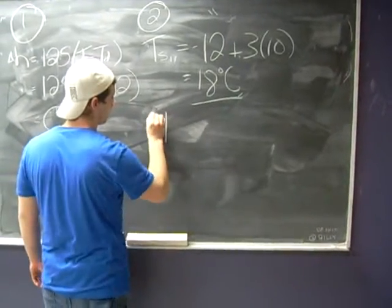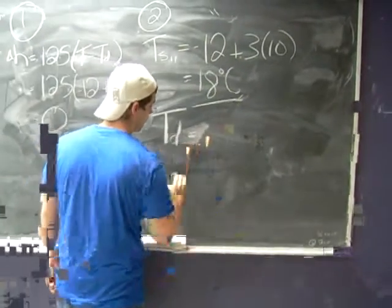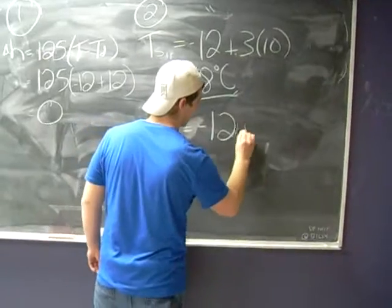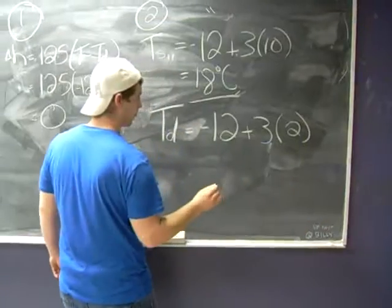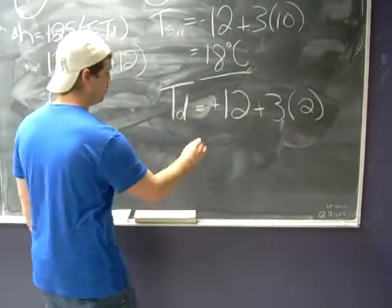Now for step 3, we just need to calculate the dew point temperature. So we have minus 12 degrees, plus 3 times 2, oh sorry, it's not minus 12 degrees, it's supposed to be just positive. Just positive here? Positive, yeah. Equals 6 degrees Celsius.